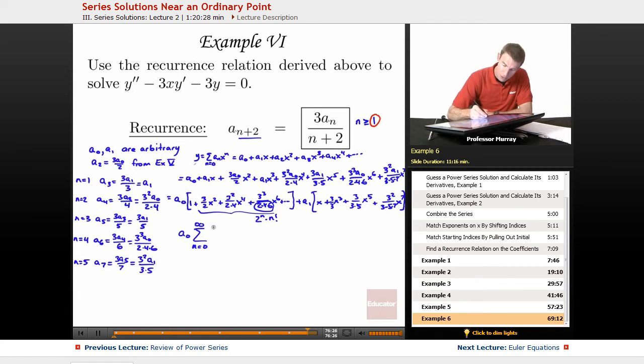And so what we have here is 3 to the N in the numerator, 2 to the N in the denominator, so that's 3 halves to the N times X to the 2N. So I can actually write that as 3 halves times X squared to the N, over N factorial.